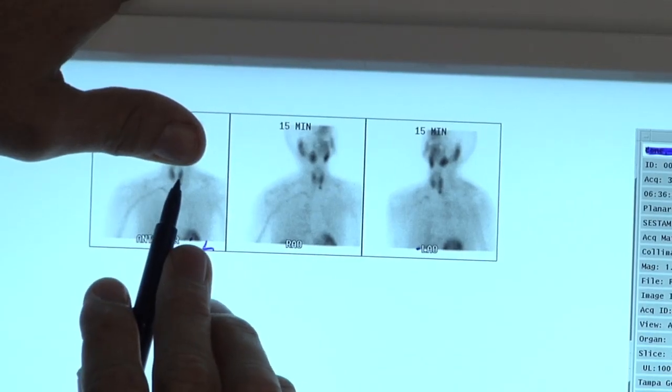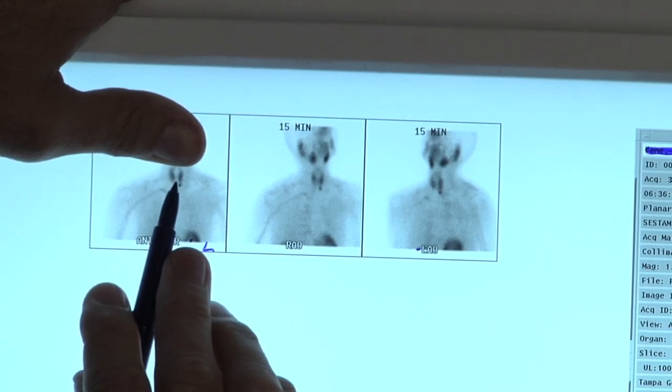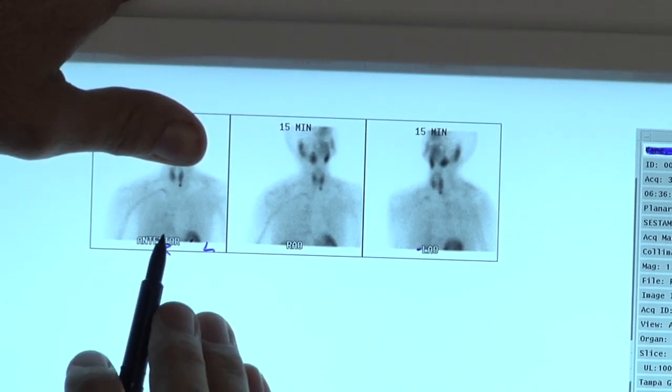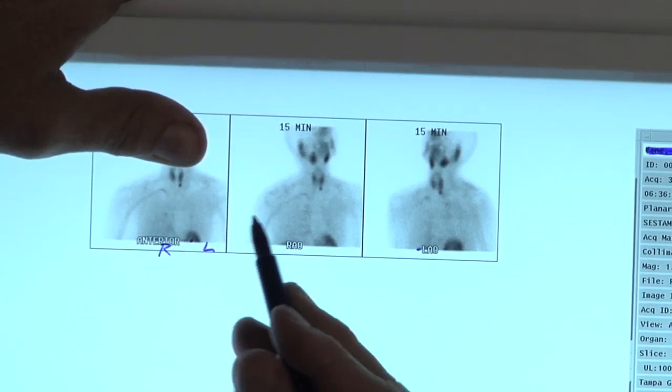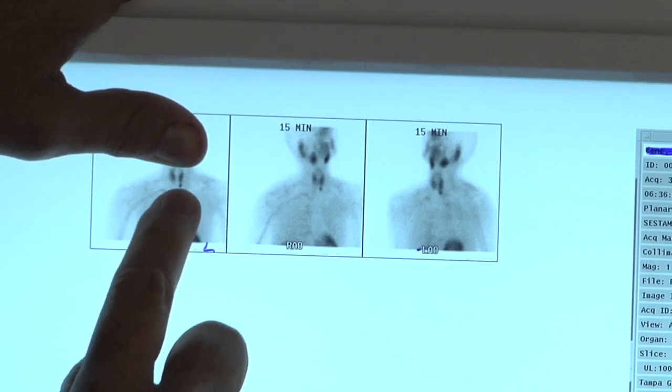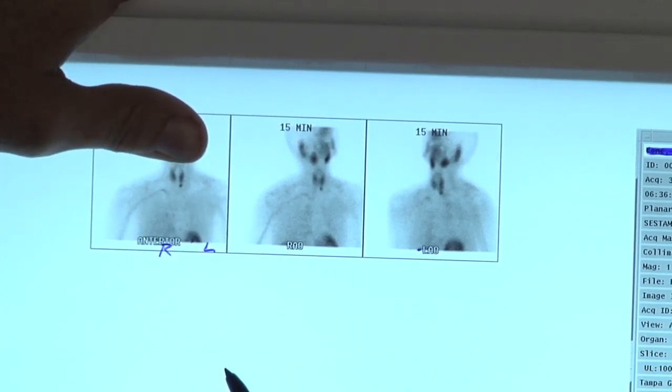This butterfly-looking item here, that's the thyroid, as we discussed earlier. The thyroid looks like a butterfly, and there it is. And this patient's tumor is this little black spot right below there. So, that's a left lower parathyroid tumor.